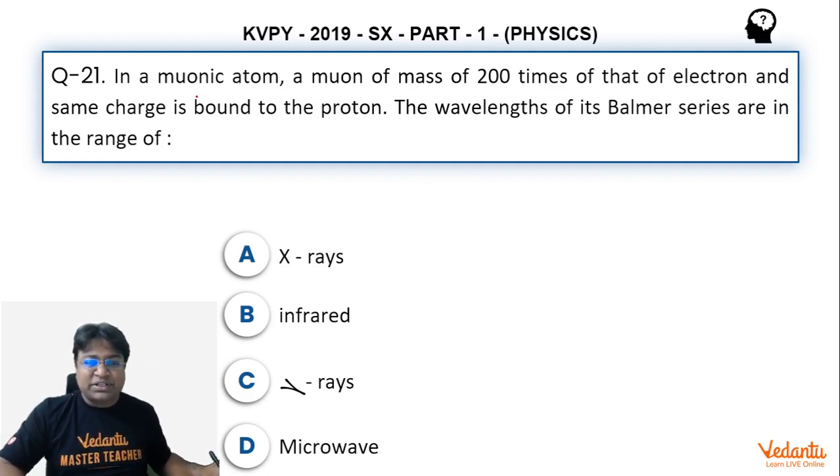This question says that in a muonic atom, a muon of mass 200 times the mass of an electron and same charge is bound to a proton. So basically we are discussing an atom in which there is a proton in the nucleus and a muon is revolving around this proton instead of an electron. The charge on this muon is same as the charge of an electron which is minus e, but its mass is 200 times the mass of an electron.